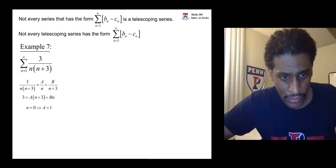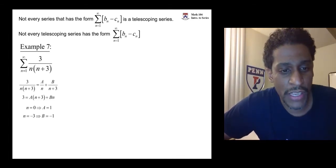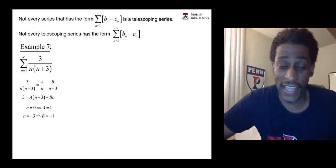If n is 0, then you'll know automatically that a is 1. If n is negative 3, you know automatically that b is negative 1.